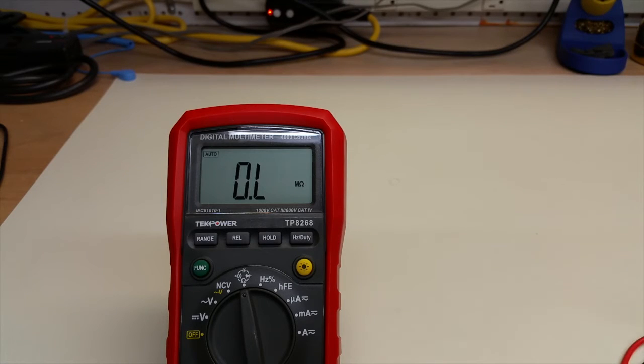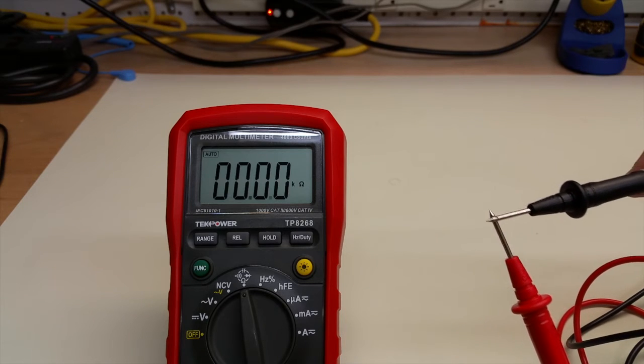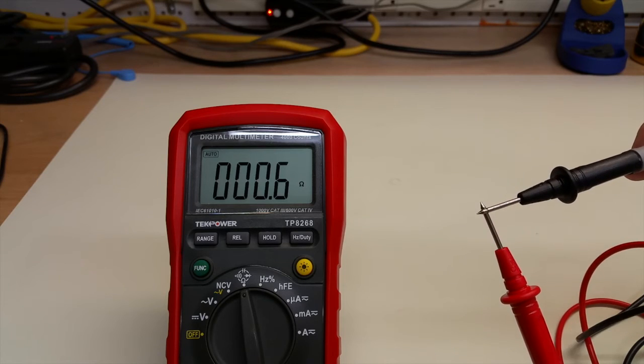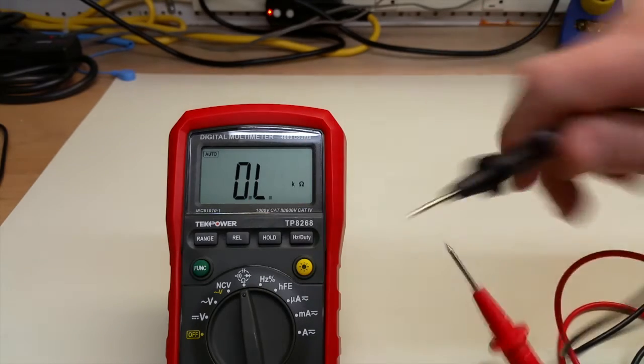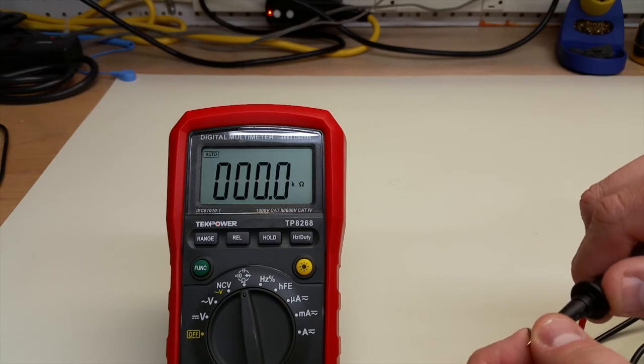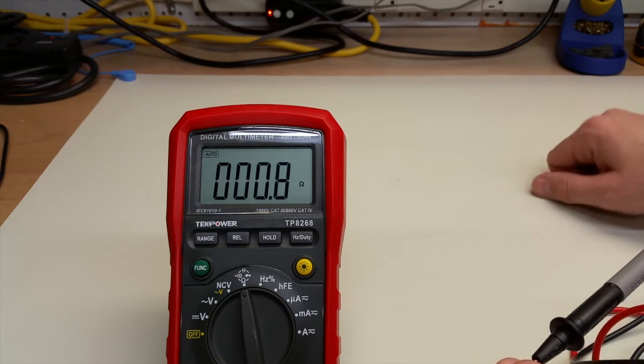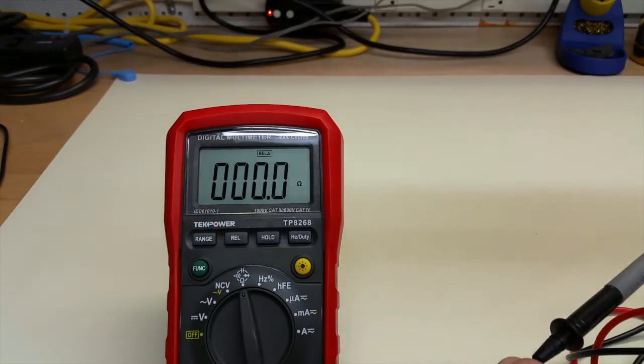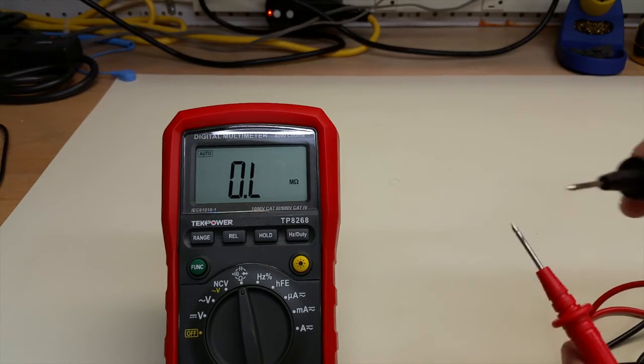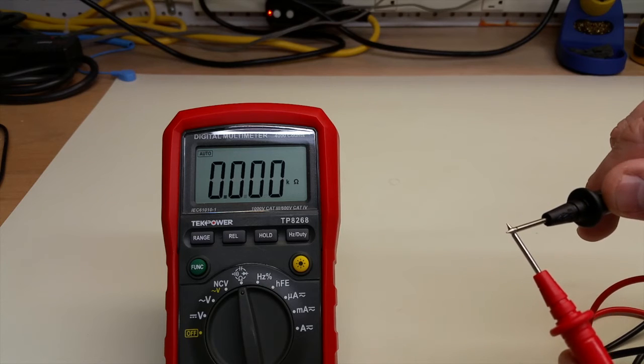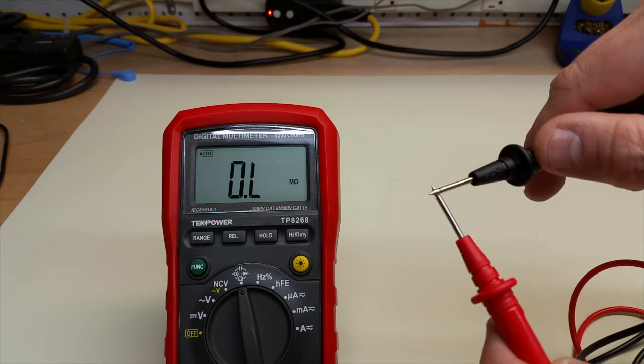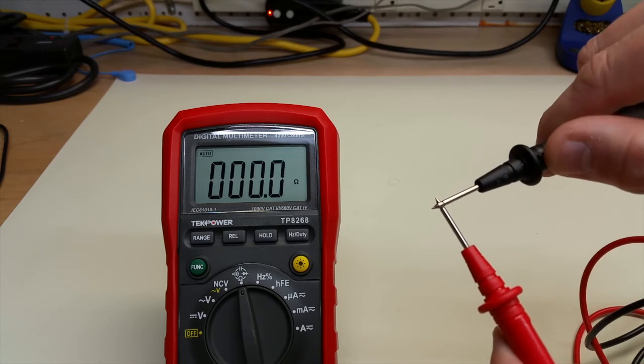So lastly, I wanted to look at the resistance and continuity. Let's just touch the tips together of the leads. And you see that you get kind of typical resistance. We should be able to zero that out with the rel. But now let's look at the leads in a little bit more depth. Instead of crossing them up there on the little ridge, let's cross them down here.